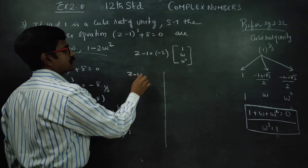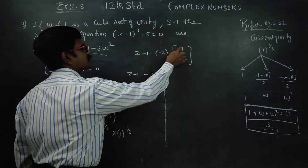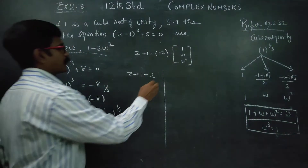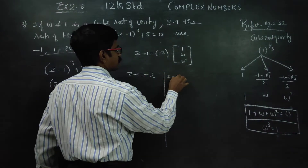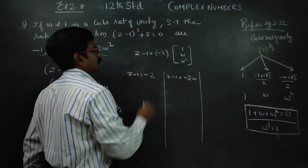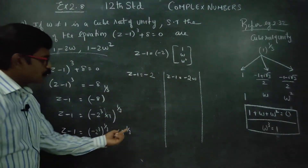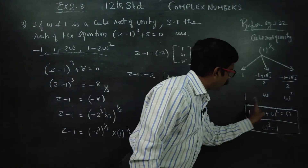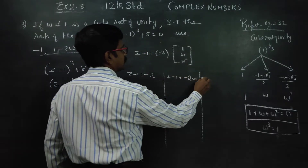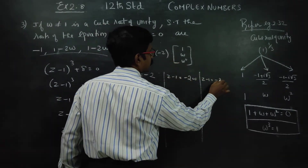So in the sum, 3 cases arise. Case 1: Z minus 1 is equal to minus 2 into 1, which is minus 2. Case 2: Z minus 1 is equal to minus 2 into omega, which is minus 2 omega. Case 3: Z minus 1 is equal to minus 2 into omega square.